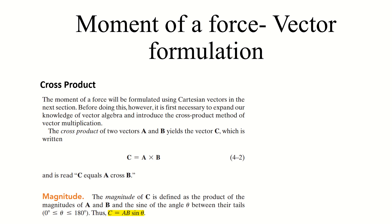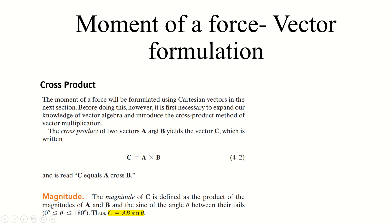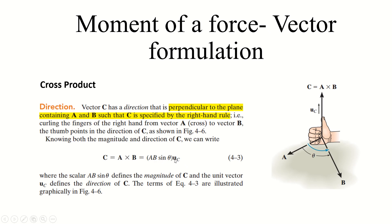There are two vectors A and B. If we want their cross product, its magnitude will be equal to C = AB sinθ. The direction of this cross product is found by using the right-hand rule, where your thumb is directed along the moment or resultant of the cross product of A and B.